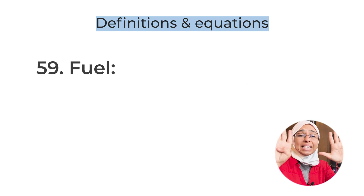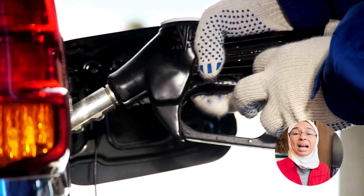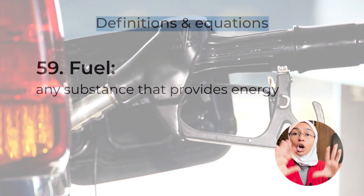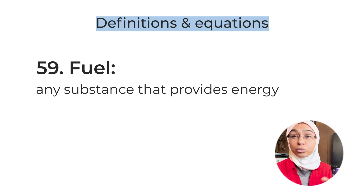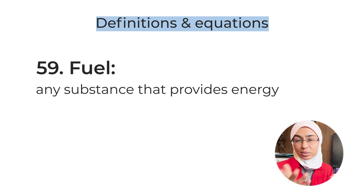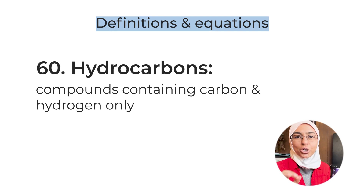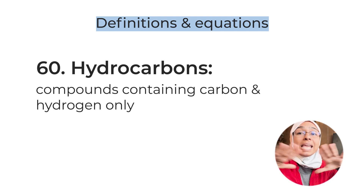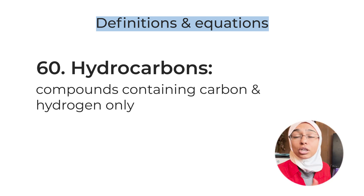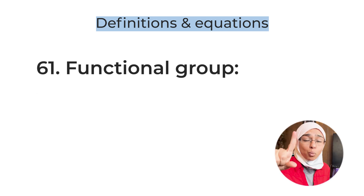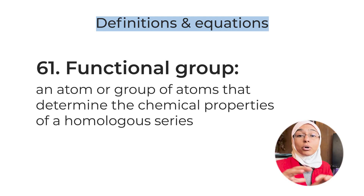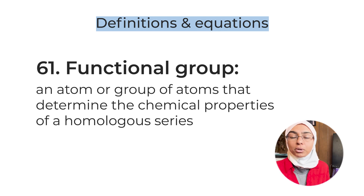Definition number fifty-nine: fuel — any substance that provides energy. Most fuels require oxygen to burn in a combustion reaction. Some fuels do not require oxygen, such as radioactive isotopes — though this has been removed from the new syllabus. Definition number sixty: hydrocarbons — compounds containing carbon and hydrogen only. If a compound contains oxygen, like ethanol or ethanoic acid, it is not a hydrocarbon. Definition number sixty-one: functional group — an atom or group of atoms that determines the chemical properties of a homologous series.